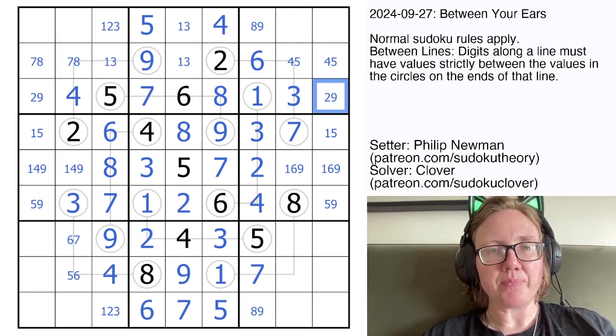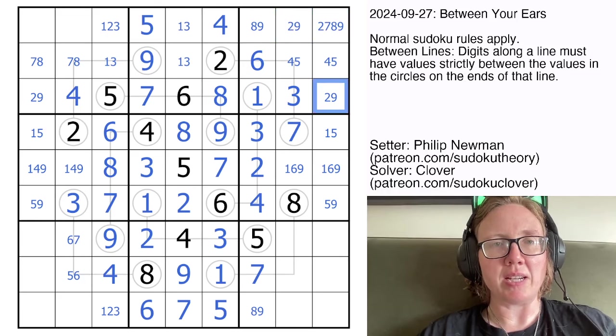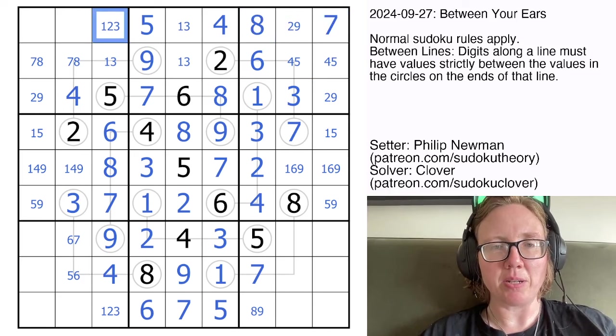And here I need 2, 7, 8, and 9. That can't be 7 or 8. That gives me a 2, 9 pair. And those are going to be 8 and 7 to finish up.